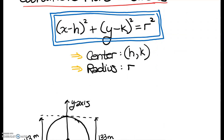Just as a reminder, our equation for the standard form of a circle is (x − h)² + (y − k)² = r², where the center is (h, k) and the radius is r.